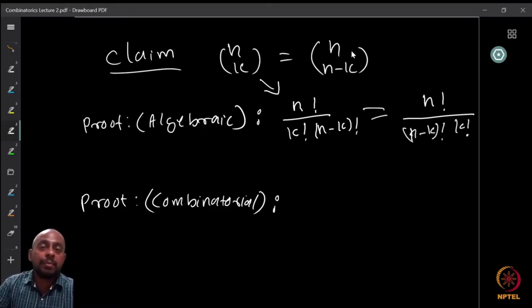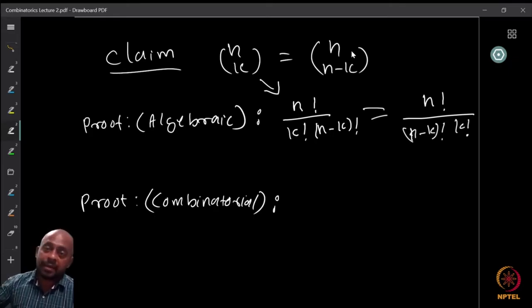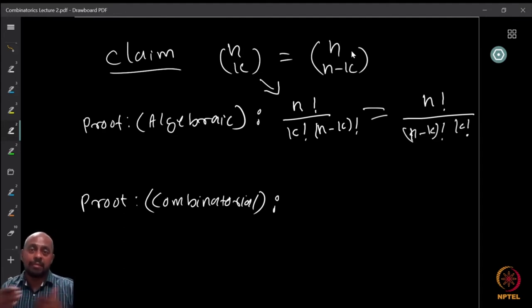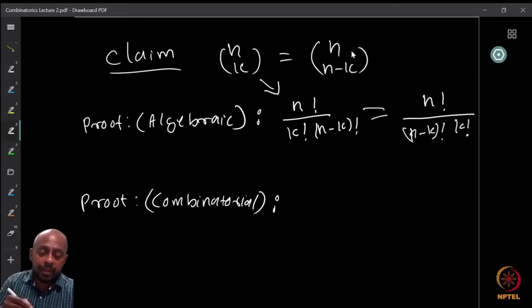In combinatorics we look at combinatorial proofs because they give other intuitions about why things must be the way they are. When I ask questions, sometimes I will say give a combinatorial proof — you might have a direct algebraic proof but we don't want that. We look at combinatorial arguments explaining why two sets we are counting must have the same number of elements. So here is a combinatorial argument: why is n choose k equal to n choose n minus k?